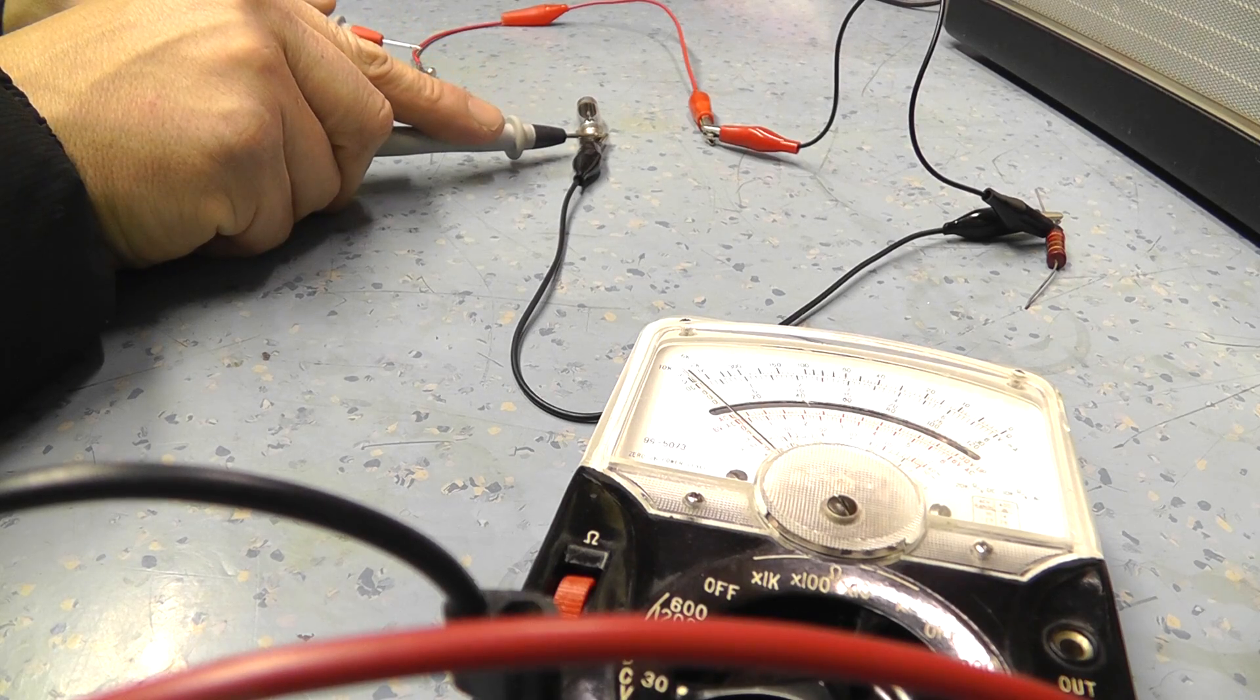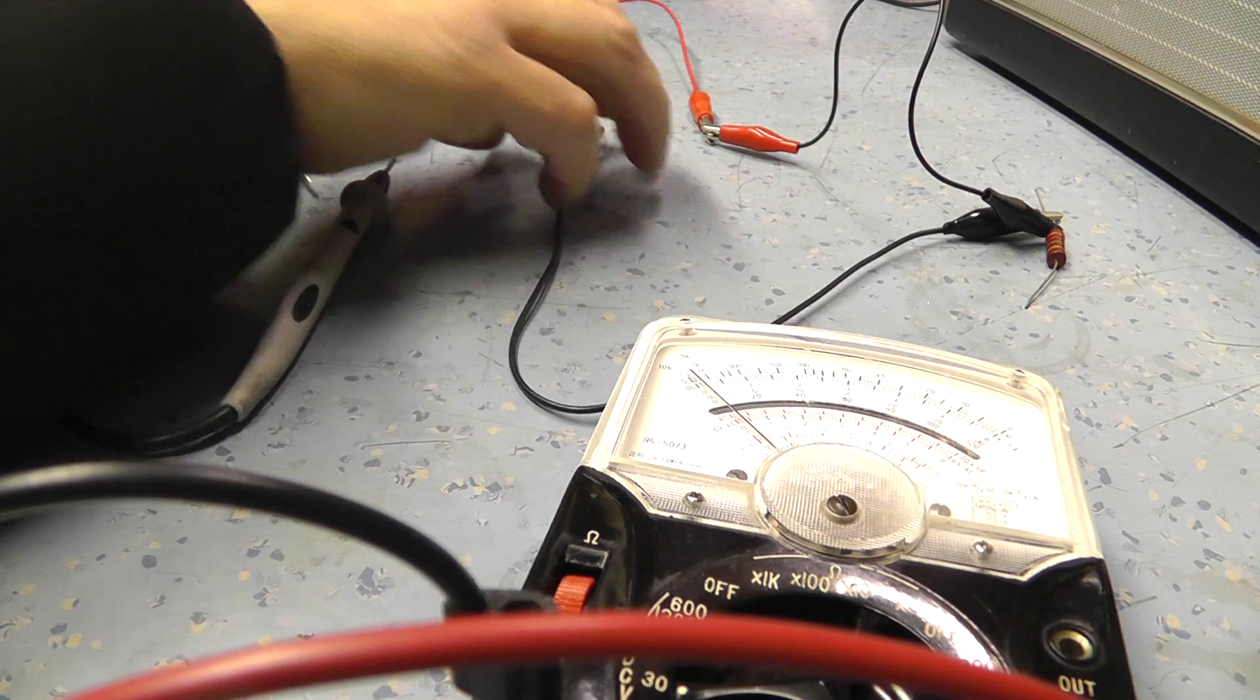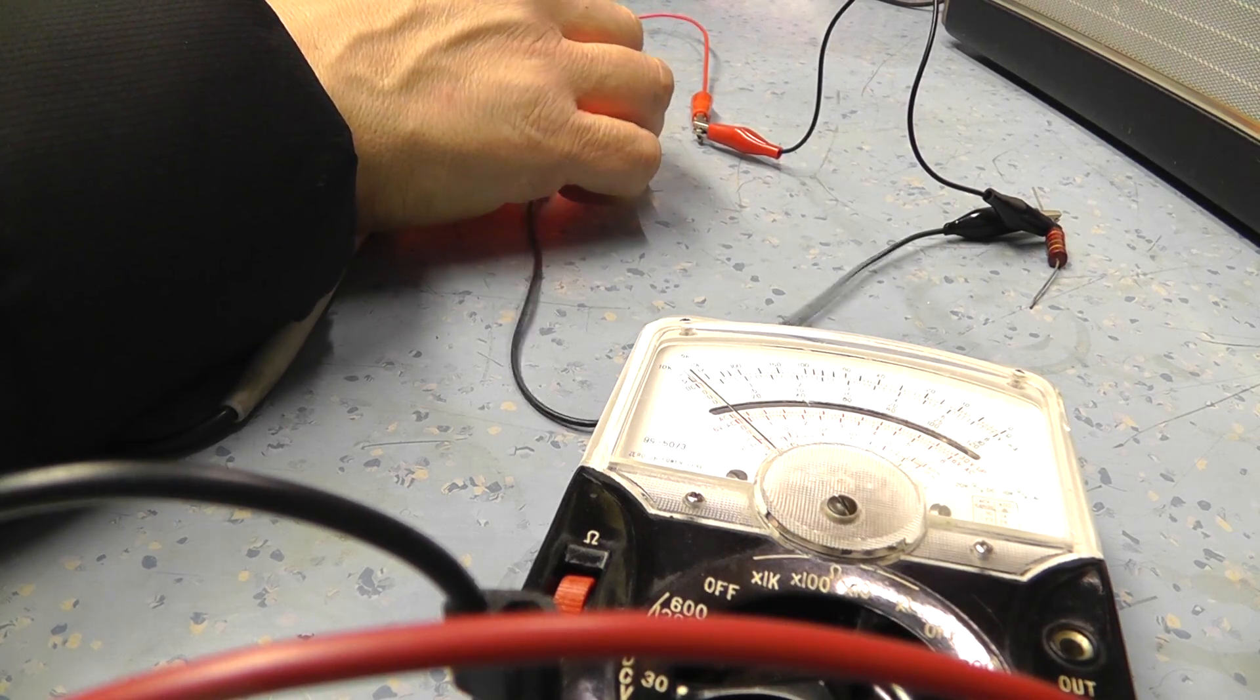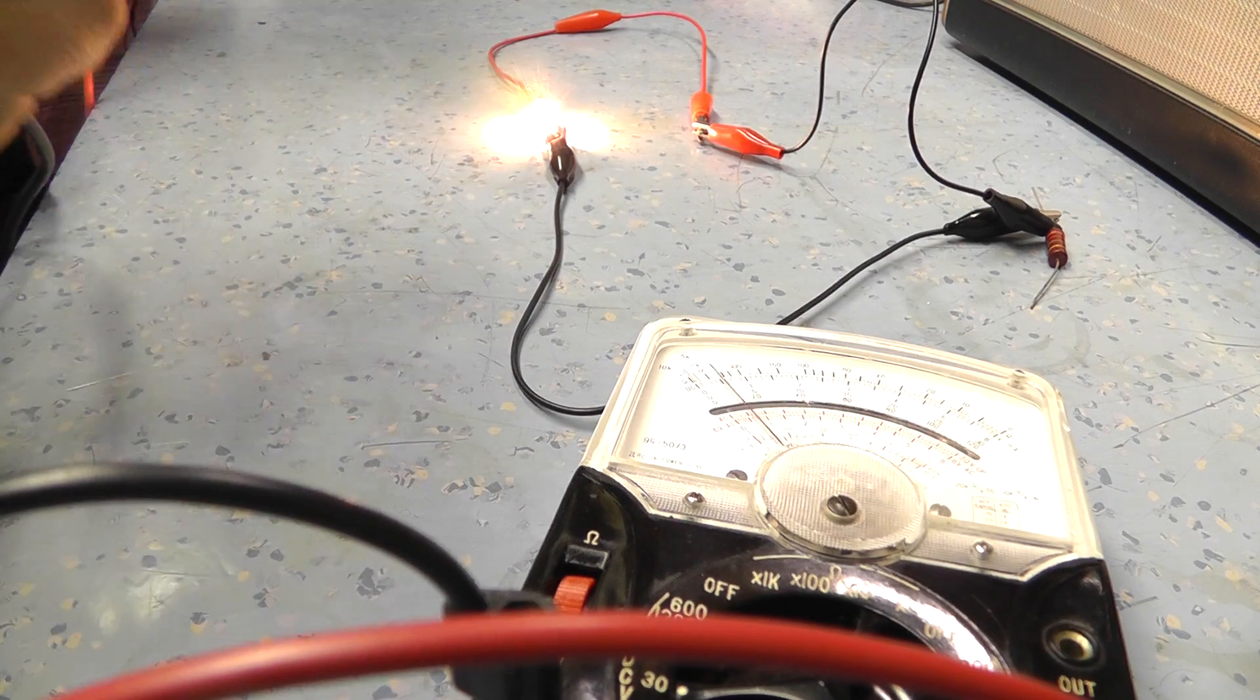I'm going to check our 12 volts. There we go. Just about half the scale. We'll connect it up to the bulb. There you go. Our 12 volts. Still got our 12 volts there. It's working fine.